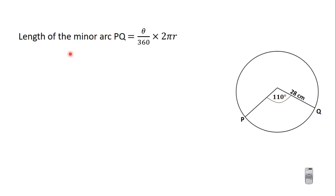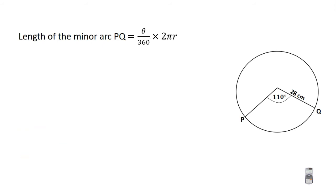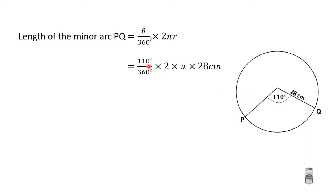The length of the minor arc PKO is equal to theta — the angle formed between the two radii — divided by 360 degrees, times 2πr. So we have theta divided by 360 degrees, times 2πr, where r is the radius of the circle, which is 28 centimeters, and theta is the angle between the two radii, which is 110 degrees.